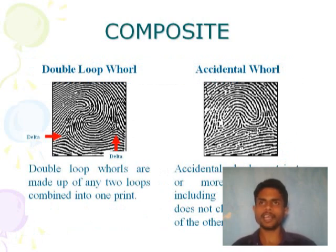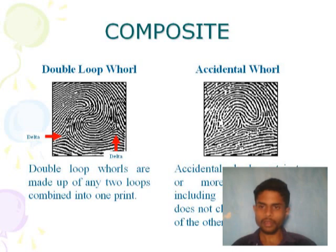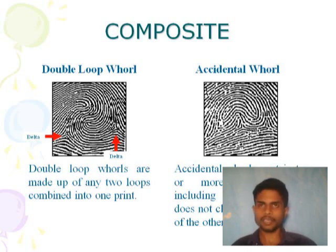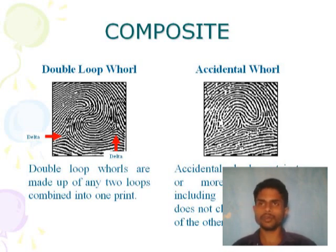Composite pattern has four types: central pocket loop, lateral pocket loop, twin loop, and accidental pattern. In the central pocket loop, there is a center circle with an inner loop that exits, but the core forms an inverted circle.